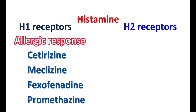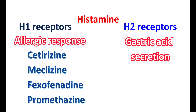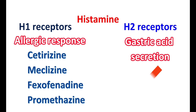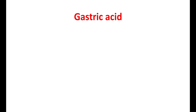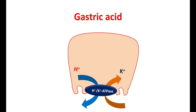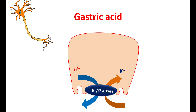H1 receptors are therefore the drug targets for antihistamines like cetirizine, meclizine, fexofenadine, and promethazine — all classified as antihistamines that block H1 receptors. On the other hand, H2 receptors are mainly located in the gastric parietal cells and are responsible for stimulating gastric acid secretion. Famotidine blocks these H2 receptors. Gastric acid secretion can also be driven by cholinergic neurons, which release acetylcholine.